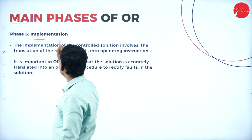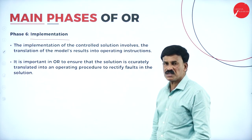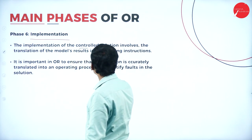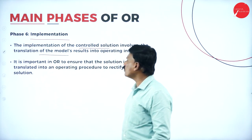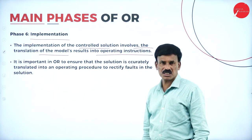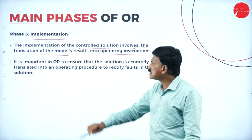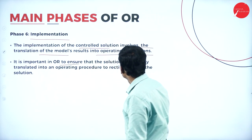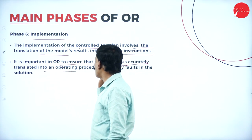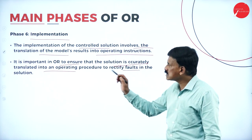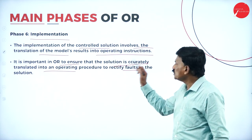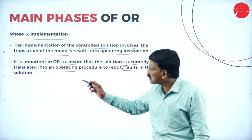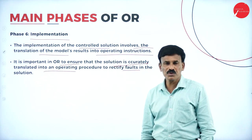Phase 6, the last phase, is implementation. After all five stages are completed, we check whether it can be implemented — that is called the implementation phase. The implementation of the control solution involves the translation of the model results into operating instructions. It is important in OR to ensure that the solution is accurately translated into an operating procedure to rectify any faults in the solution. These are the main phases of operation research.